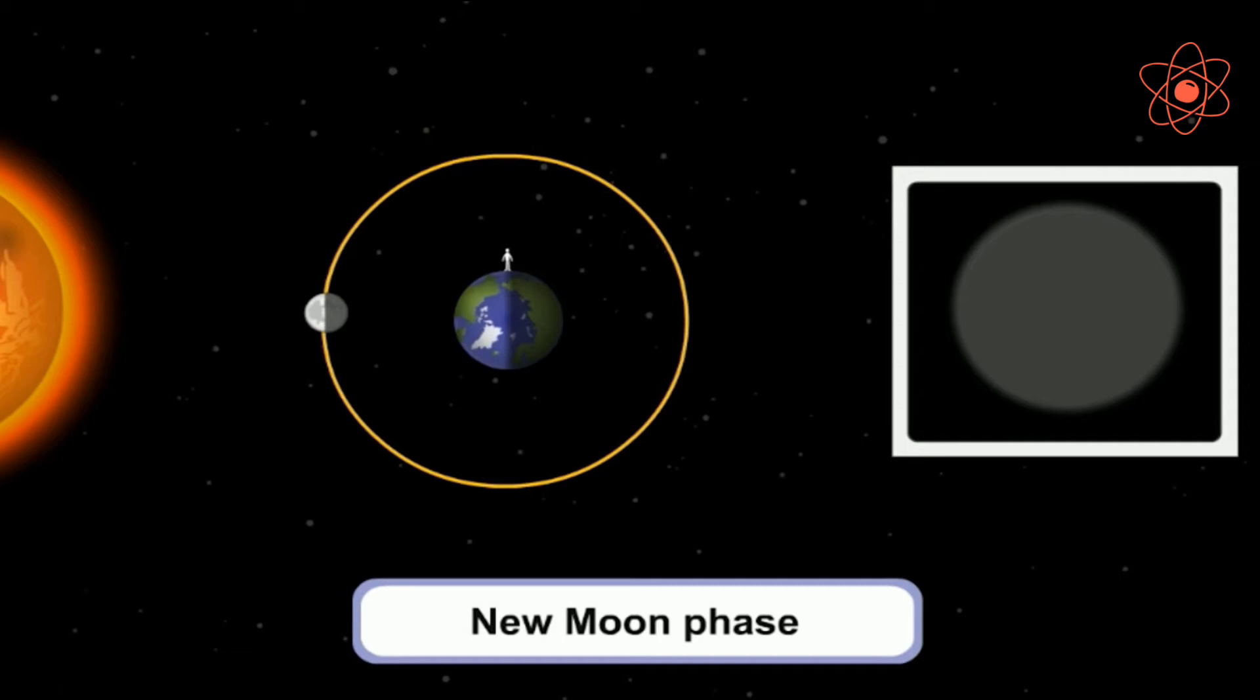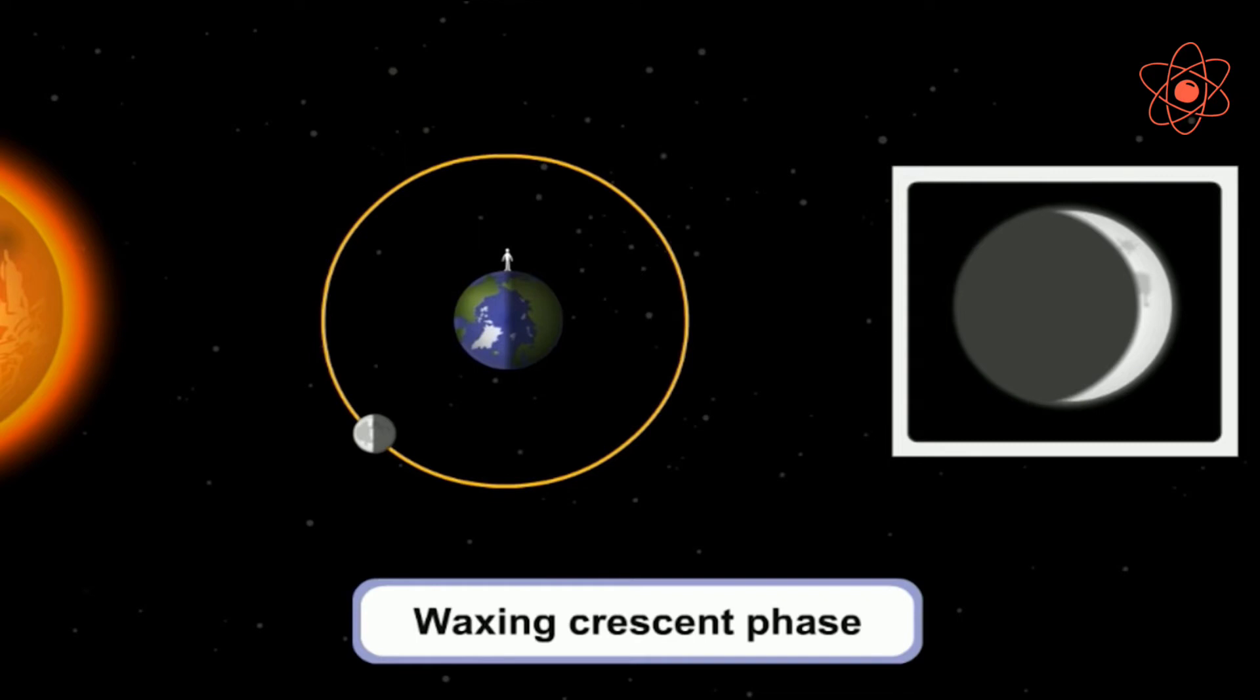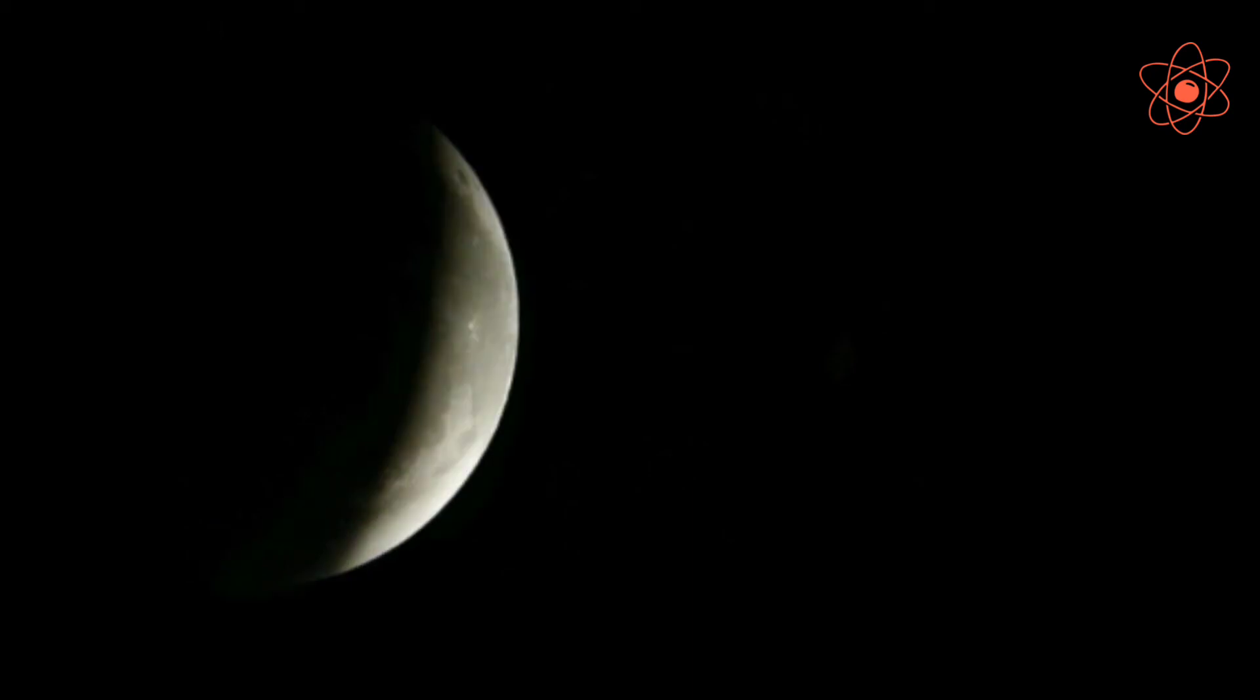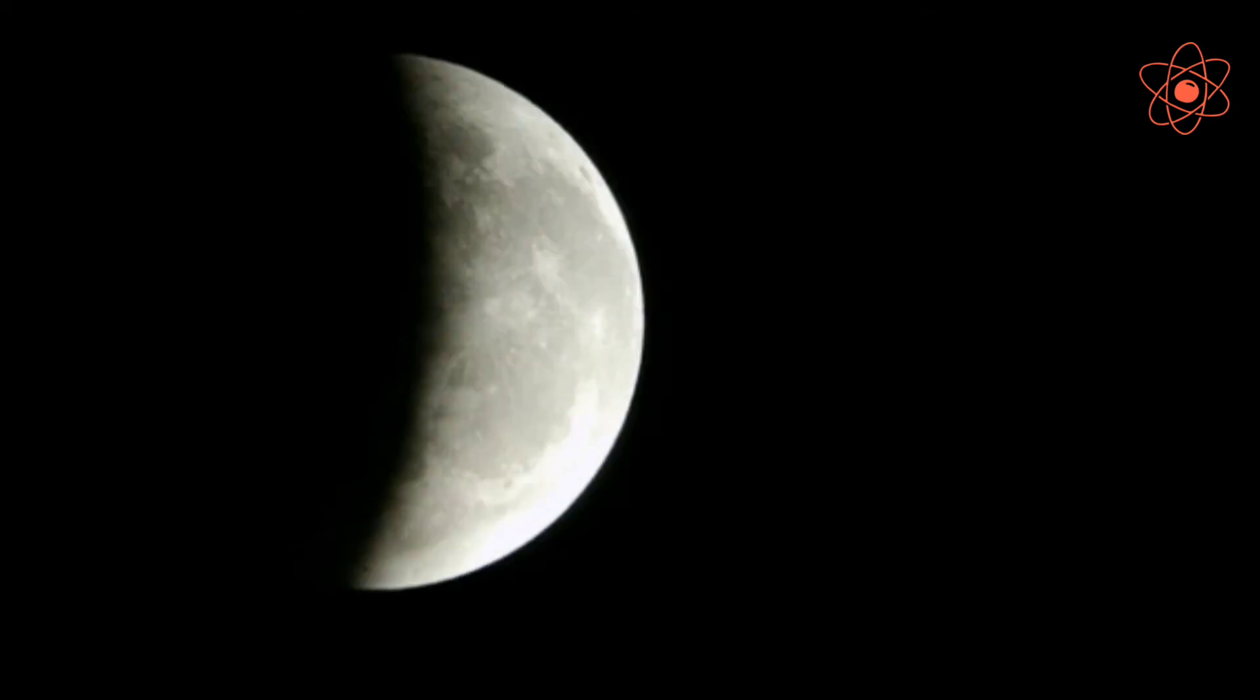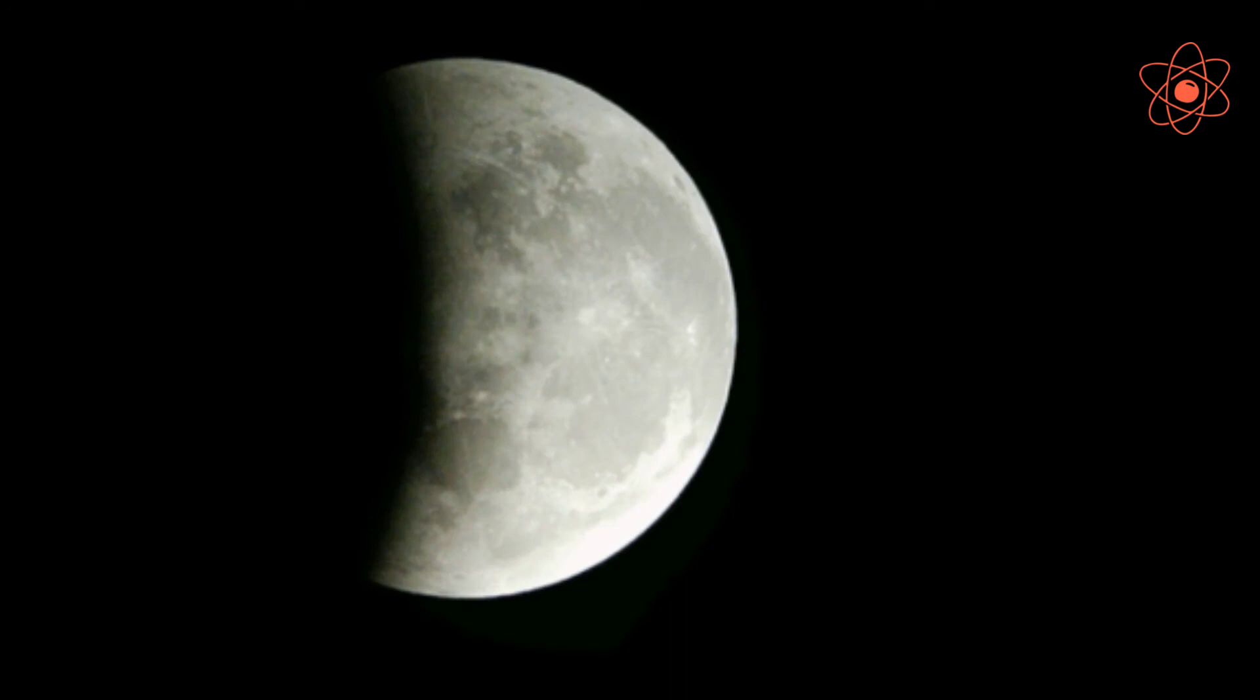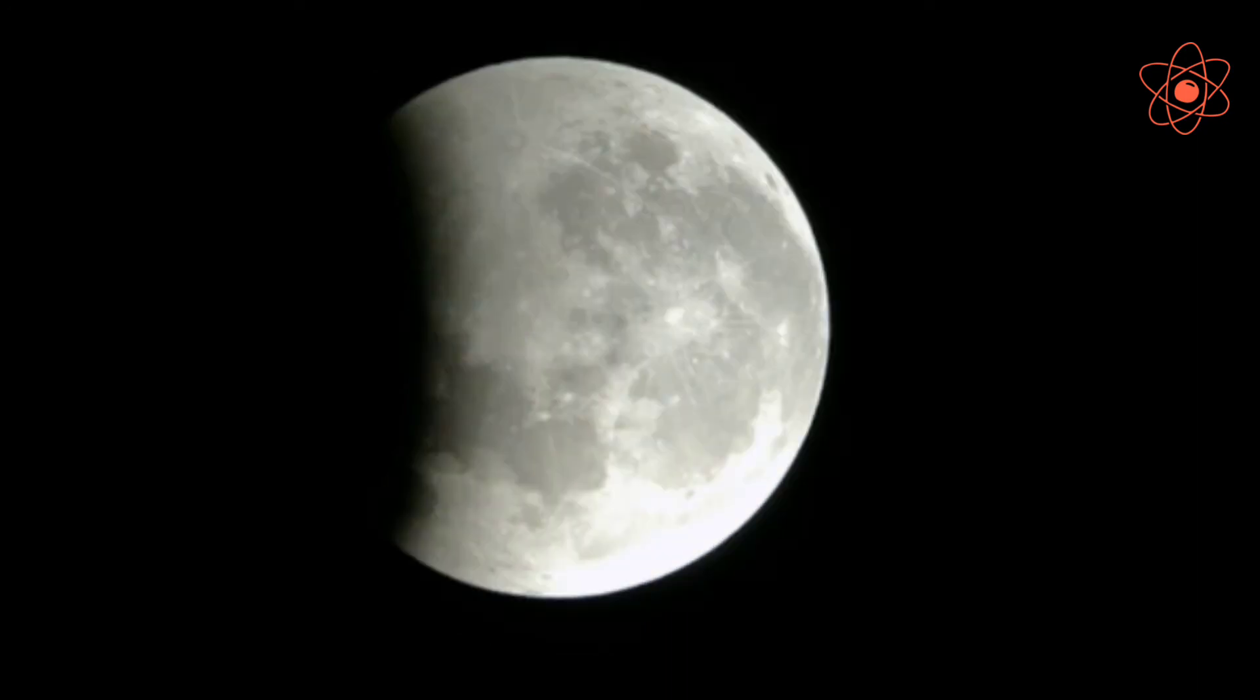The next day, the Moon changes its position slightly due to the relative motion between the Earth and the Moon and thus it is visible as the crescent. Each day, the amount of light falling on the surface of the Moon increases and accordingly it forms the First Quarter, Half Moon, Gibbous Moon and then the Full Moon, in which the entire circle of the Moon is visible.